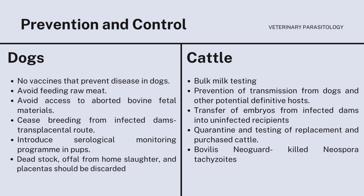In cattle, prevention includes bulk milk testing or monitoring seroprevalence in lactating cows, prevention of transmission from dogs and other potential definitive hosts. Transfer of embryos from infected dams into uninfected recipients can prevent endogenous transplacental transmission of Neospora caninum. Quarantine and testing of replacement and purchased cattle are also recommended. Bovilis Neospora Guard is a commercially developed vaccine that contains killed Neospora tachyzoites and is applied to healthy pregnant cows during the first trimester.